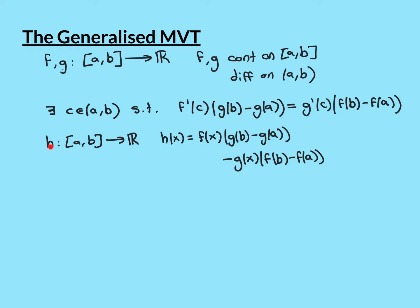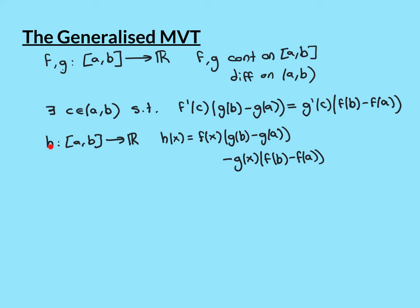This proof is actually really simple. We define a new function h, defined on the same closed interval [a, b], as follows: h(x) = f(x) times [g(b) minus g(a)] minus g(x) times [f(b) minus f(a)]. Here g(b) minus g(a) and f(b) minus f(a) are just real constants, so h is just a real constant times f(x) minus another real constant times g(x). We'll now apply the Mean Value Theorem to h, and the result will drop out of that.